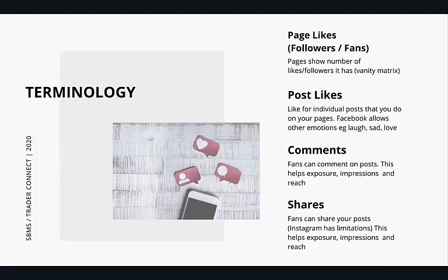Post likes are different to page likes — it's the individual post that people can like when you post a picture, video, or comment. On Facebook they allow more emotions now, like a laughing face, sad face, or love face, giving you opportunities to see how emotionally engaged your followers are. Comments on each post appeal to the algorithms on Instagram and Facebook that measure how engaging the post is, making them more likely to show it in other people's feeds. Likes are weighted first, then comments are heavier weighted, then shares. Once shares are really popular, that's when it becomes what's called viral.